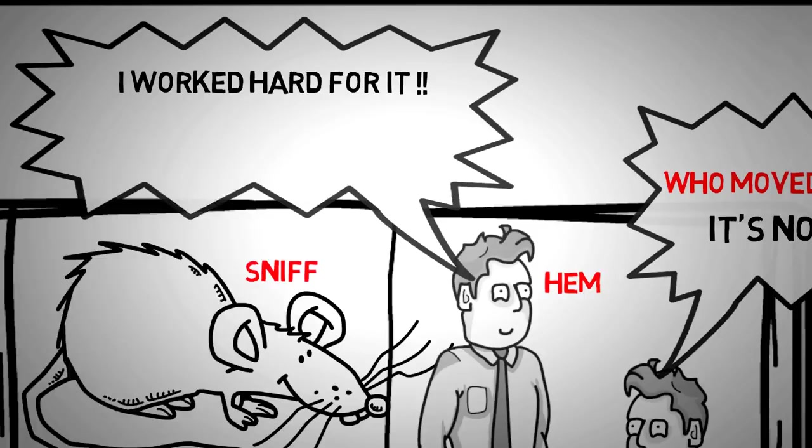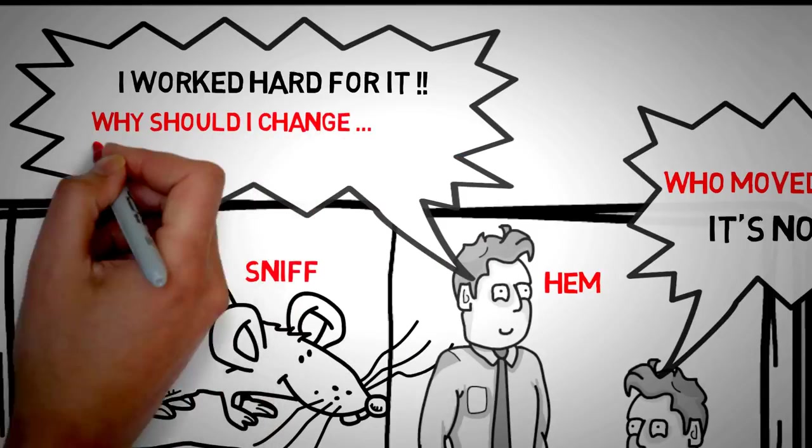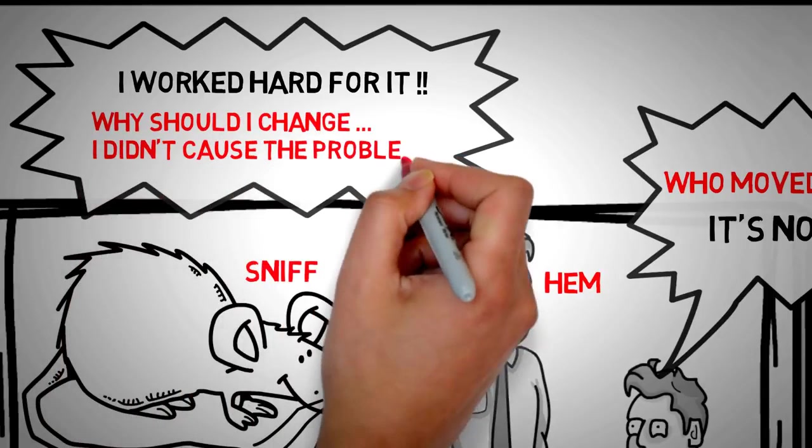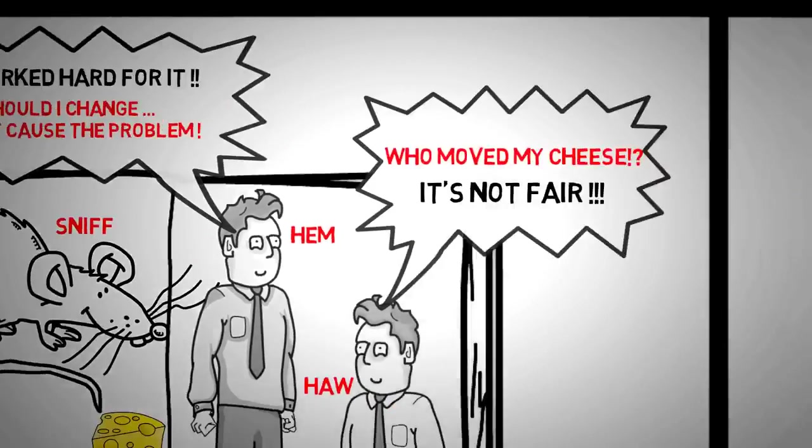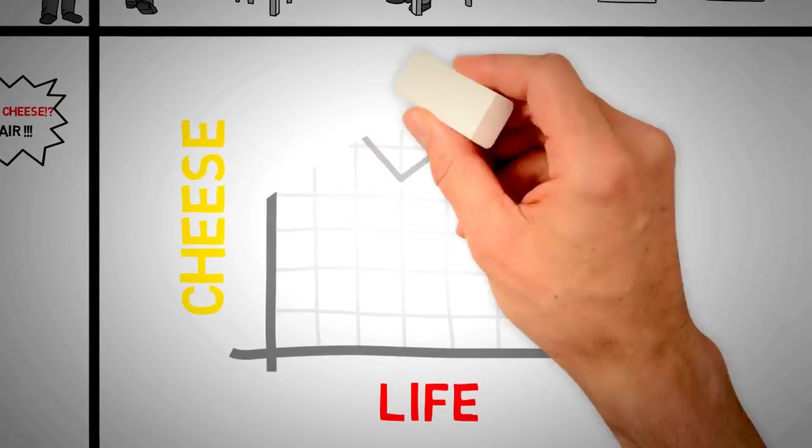Hem's complicated brain and deep belief system demanded to know why this had been done to him. While Hem and Haw were busy worrying about what happened to them, Sniff and Scurry were already out finding new cheese in uncharted territory.